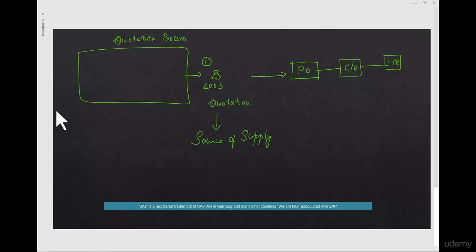So whenever we want coffee, we can use vendor 4003. And what are the modes in which you maintain the data for 4003 at this price? There are three ways primarily in which you can create a source of supply. The first source of supply is a purchase info record. The second source of supply is a contract. The third source of supply is a scheduling agreement.